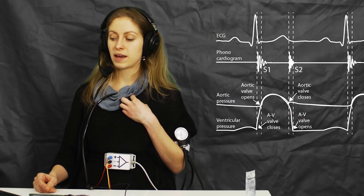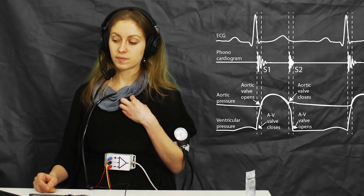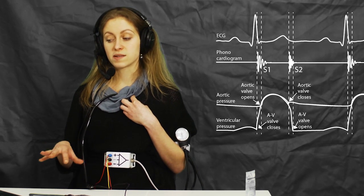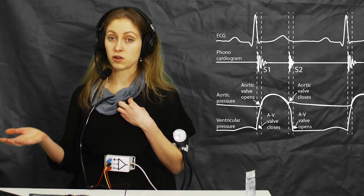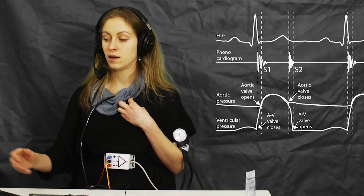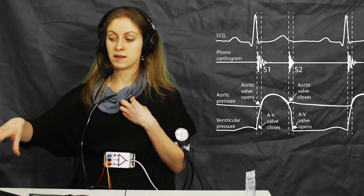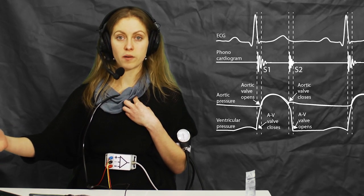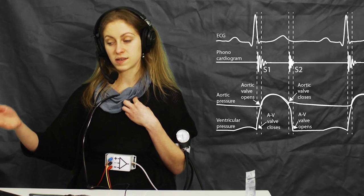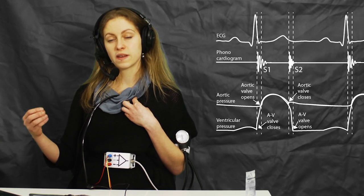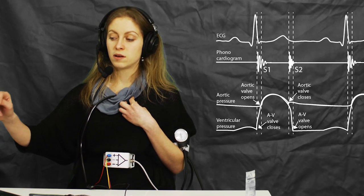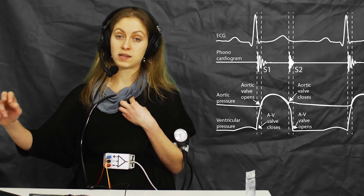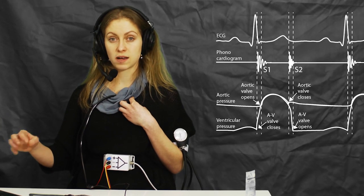What we hear are two sounds in particular: S1 and S2. S1 marks the transition from diastolic to systolic blood pressure and S2 marks the transition from systolic to diastolic. The upper trace is my ECG where the R peak marks roughly the beginning of the systole and corresponds to the heart sound S1. Whereas the end of the T wave marks roughly the beginning of the diastole and corresponds to the heart sound S2.